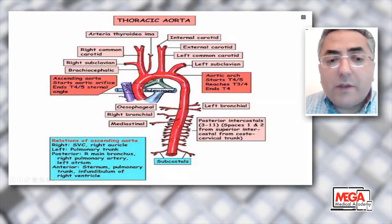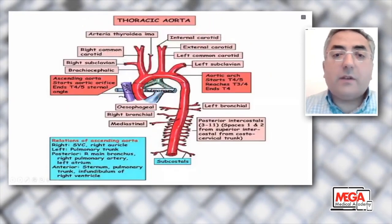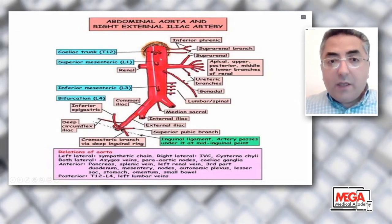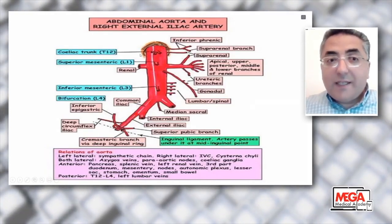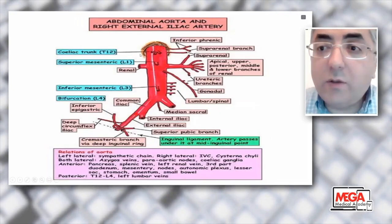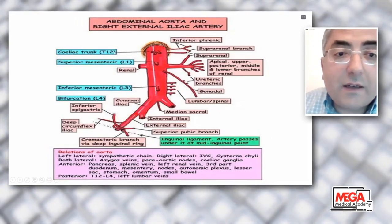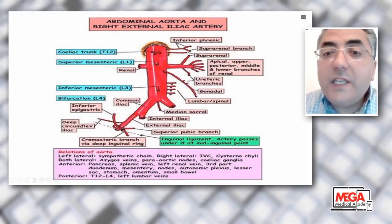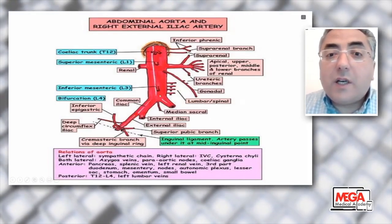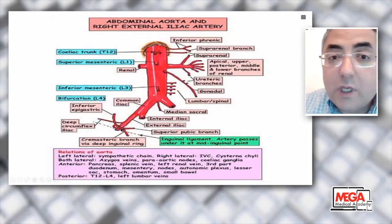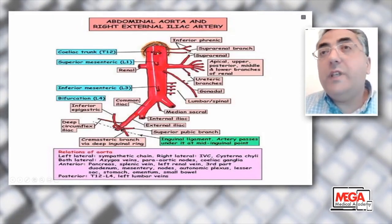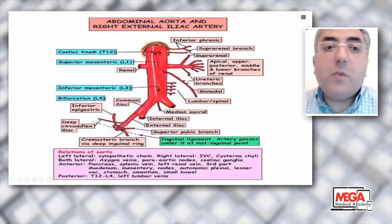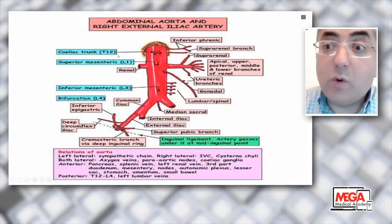Anatomy is very important. Understand the relations of the aorta — ascending, arch, and descending — with special emphasis on the pulmonary trunk, which may be compressed by an aneurysm, and the right main bronchus and left atrium. Anteriorly, there is the pulmonary trunk infundibulum of the right ventricle. For the abdominal aorta, know the level of surgery and extent. If using an endograft or stent, consider coverage of the celiac trunk at T12, superior mesenteric at L1, and the renal arteries — re-implantation or fenestrated stents may be required to prevent ischemia.